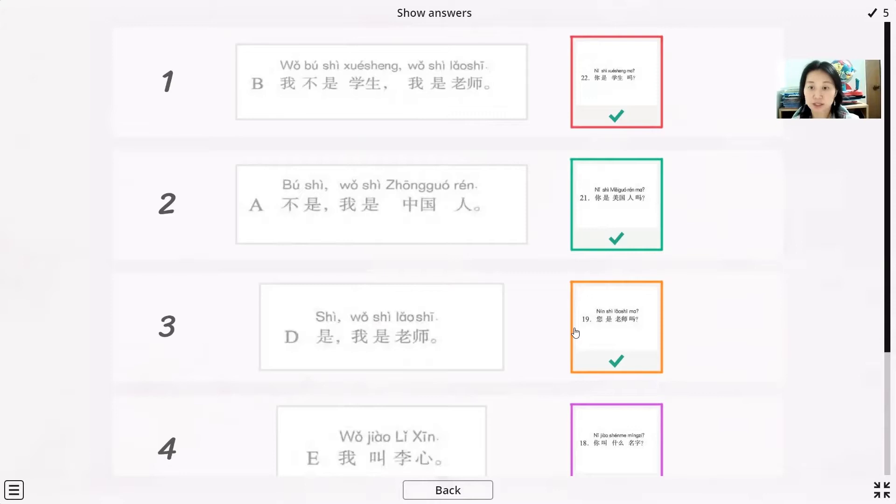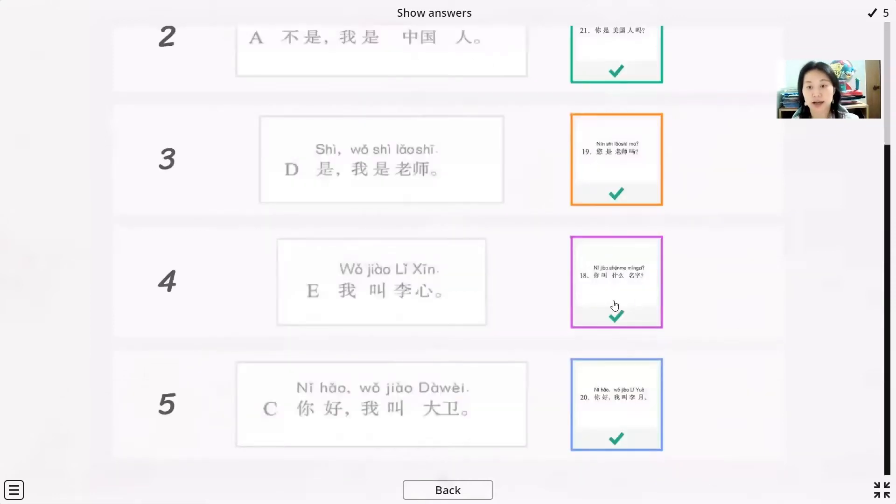Ni shi meiguoren ma. The answer is bu shi, wo shi zhongguoren. The third one, ning respect the way, ning shi laoshi ma. Ma at the end of the sentence that means always yes question. Ma, the pronunciation just like second tone, just the right stop. And the answer is wo shi laoshi.